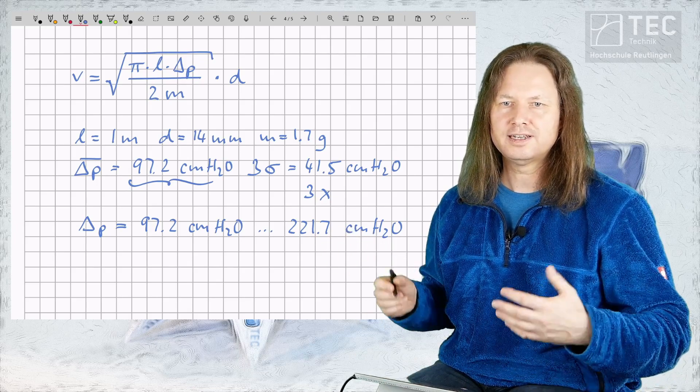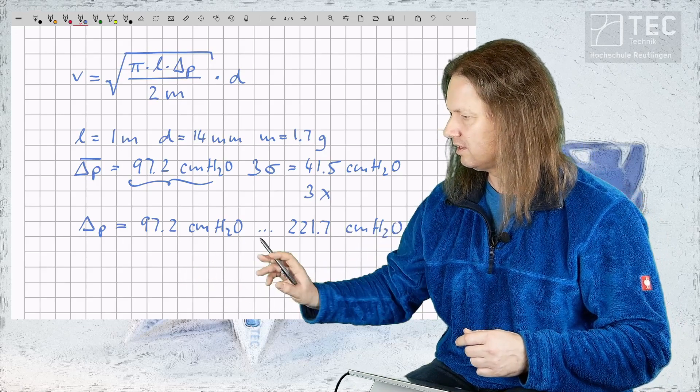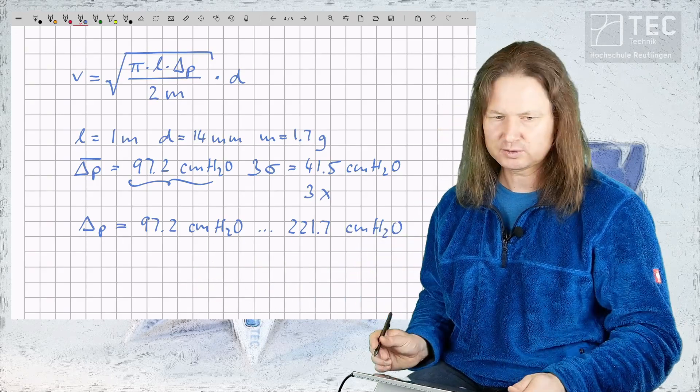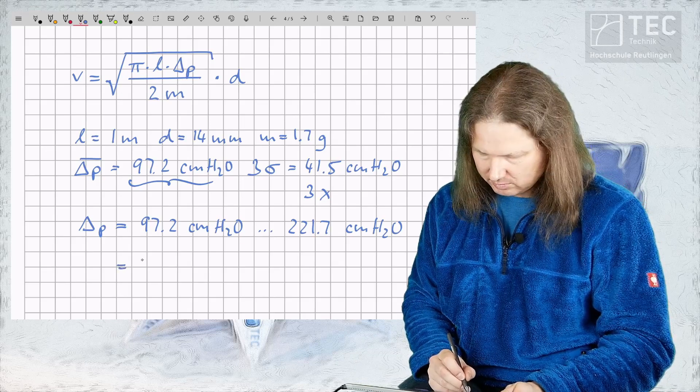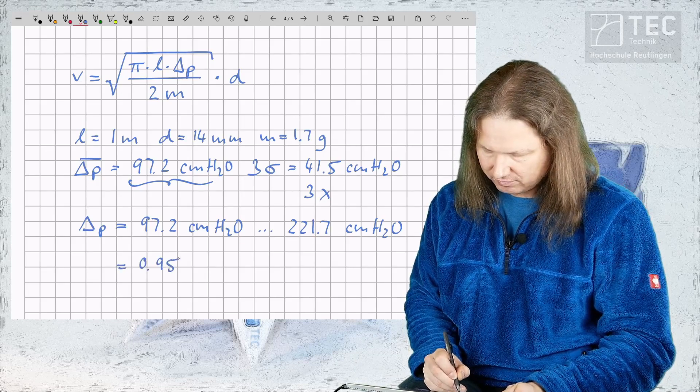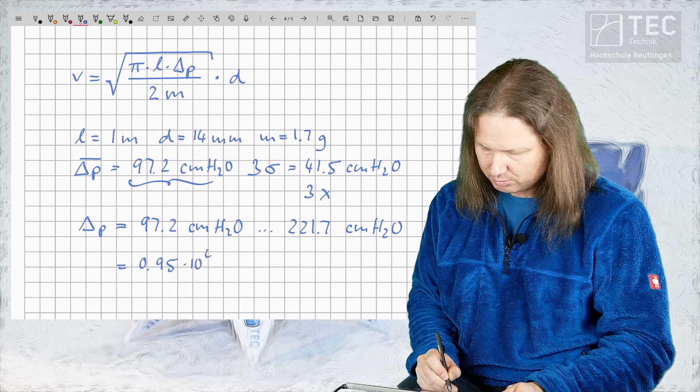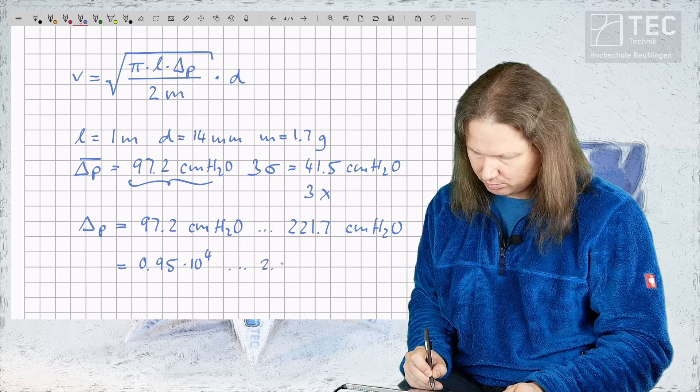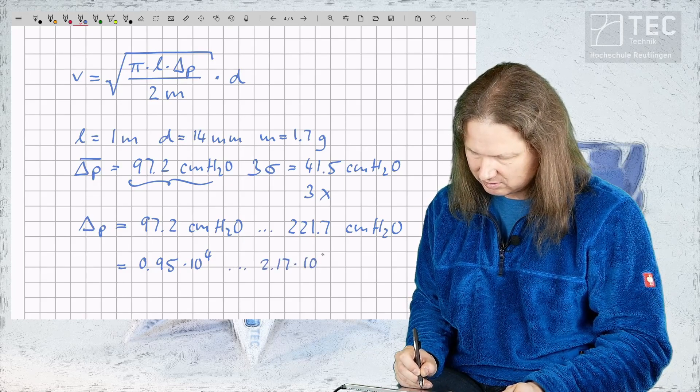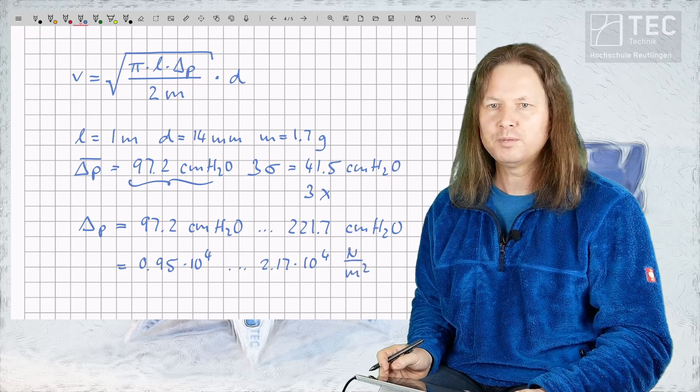We need to do our calculations in SI units. So we need to convert these pressures given in centimeters water column to 0.95 times 10 to the power of 4 up to 2.17 times 10 to the power of 4 newtons per square meter.